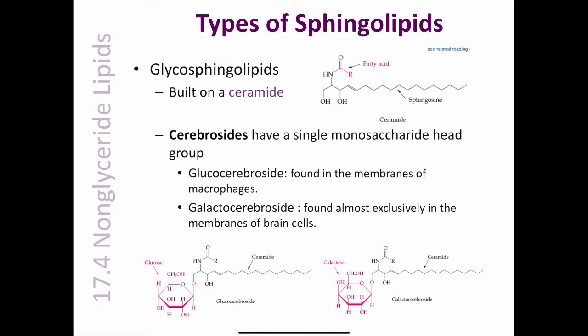Glycosphingolipids, or glycolipids, include the cerebrosides, sulfatides, and gangliosides, and are built on a ceramide backbone structure, which is a fatty acid amide derivative of sphingosine. Here's the structure of ceramide.